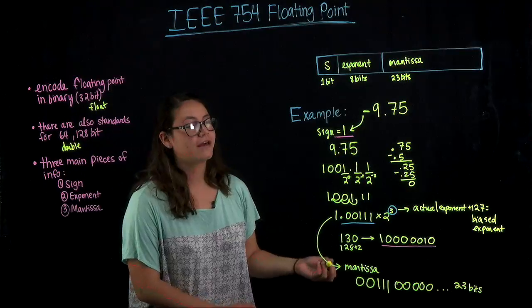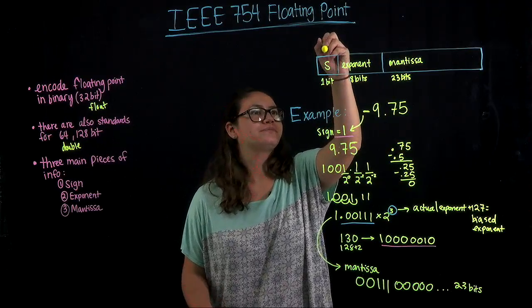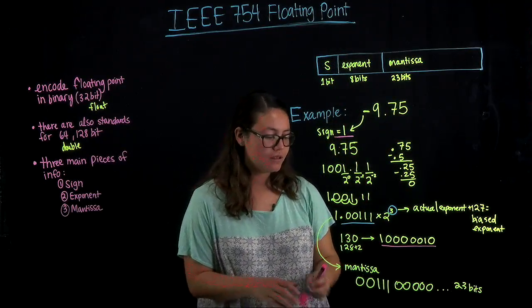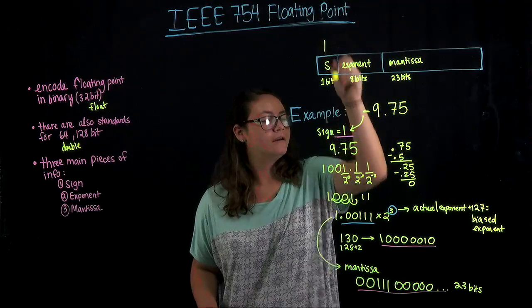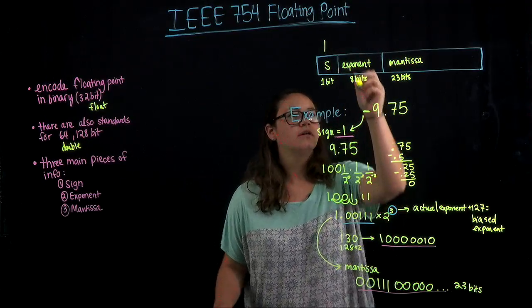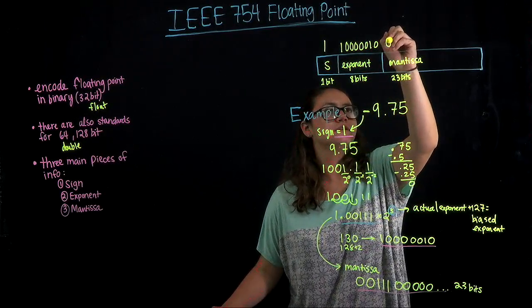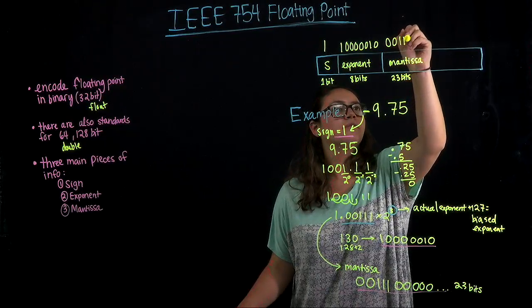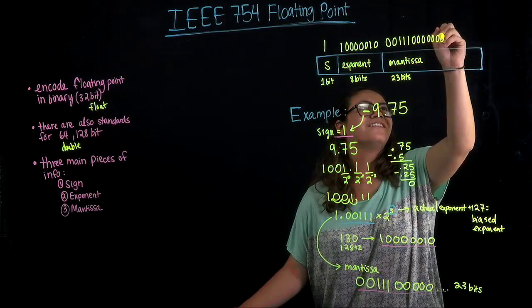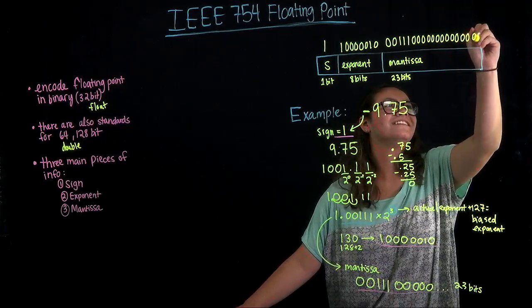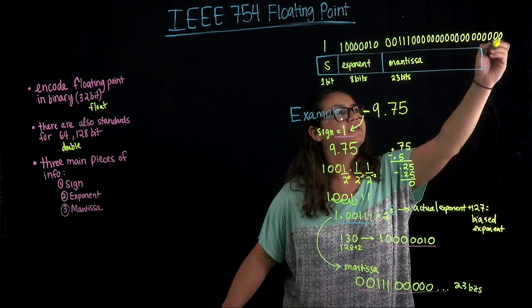If we want to put it all together, maybe we can do that up here. Remember that our sign bit was 1, so we're going to have a 1 here. And then we'll just copy our exponent up here: 10000010. And then our mantissa: 00111. You just add zeros to the end of it to 23 bits.